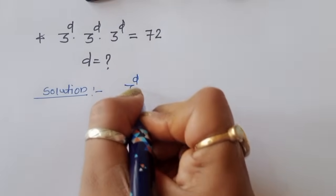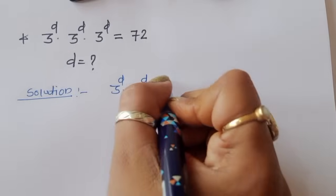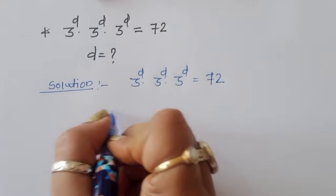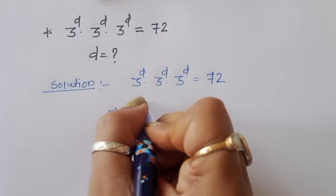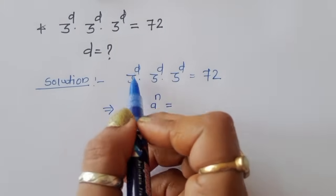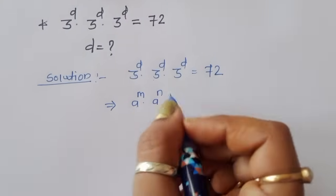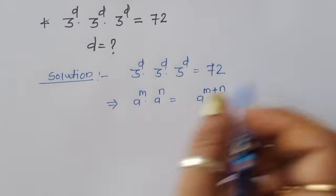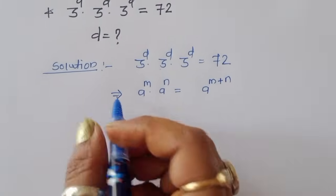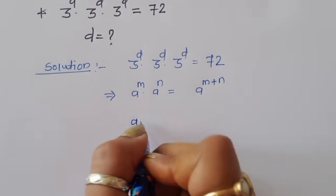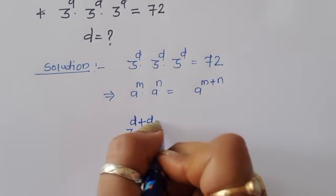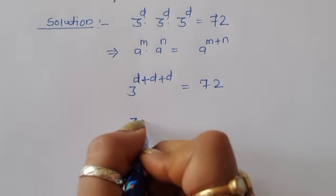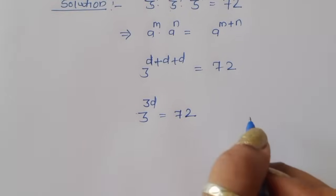3 power d times 3 power d times 3 power d is equal to 72. We are using the formula: if a power m times a power n is given, it becomes a power m plus n. Using this formula here, we get 3 power d plus d plus d is equal to 72, so it becomes 3 power 3d is equal to 72.